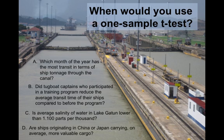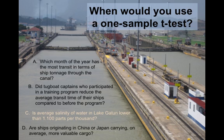Is average salinity of water in Lake Gatun lower than 1,100 parts per thousand? In this case we do have one sample, which would be samples of the salinity of Lake Gatun, and we're comparing it to a target or threshold value. And in this case the target or threshold value is an interval or ratio variable, parts per thousand. So in this case you actually would be able to use the one-sample t-test. And then, are ships originating in China or Japan carrying on average more valuable cargo? Here you have two different samples, China or Japan. So you would not be able to use a one-sample t-test here.